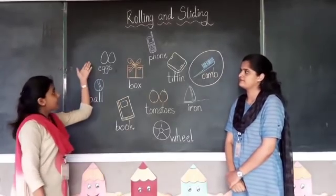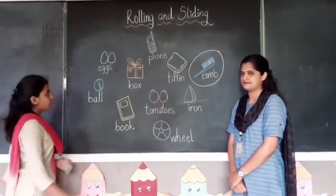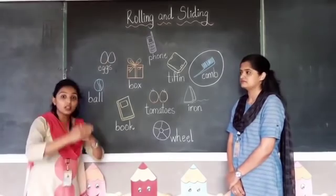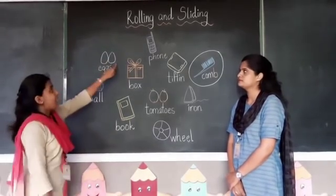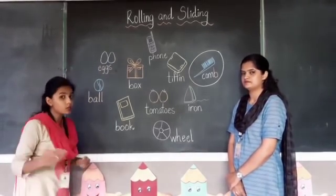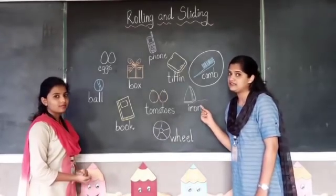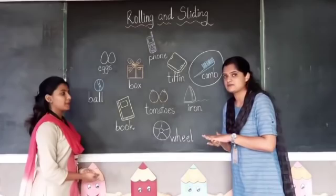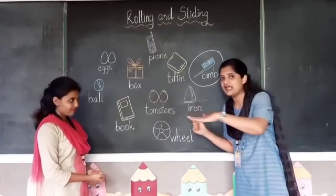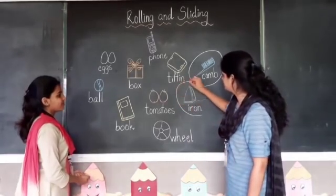Can you see this picture? Yes — these are eggs. Eggs have a curved surface, so they do not slide. They roll. So let us go to the next object. Can you see a picture here? It is an iron. Iron has a flat surface, so iron will slide. So I am going to circle the picture of the iron.